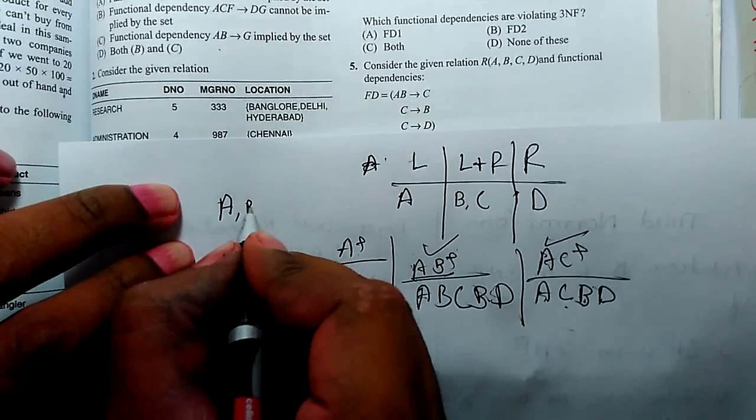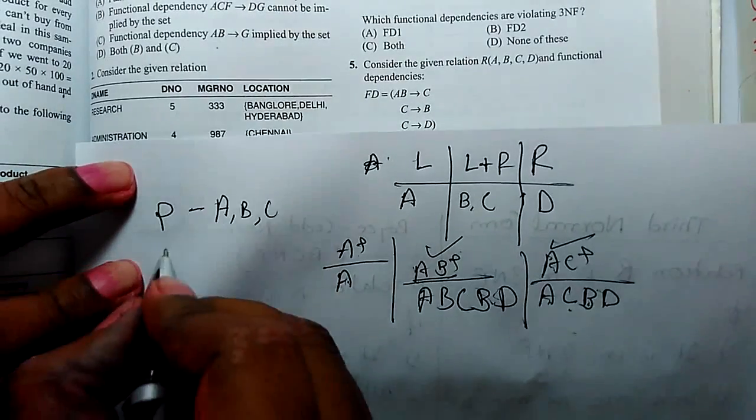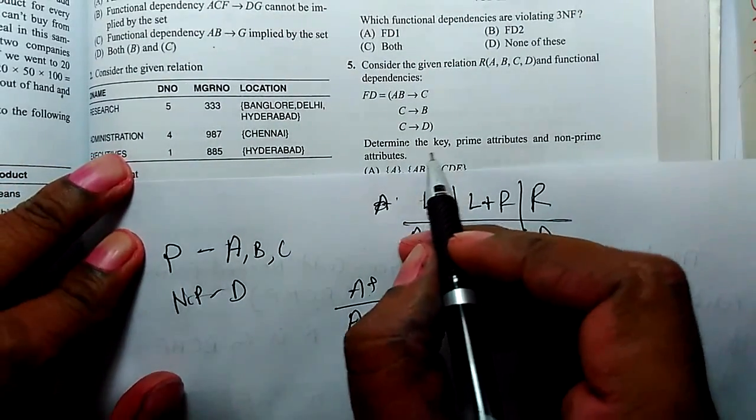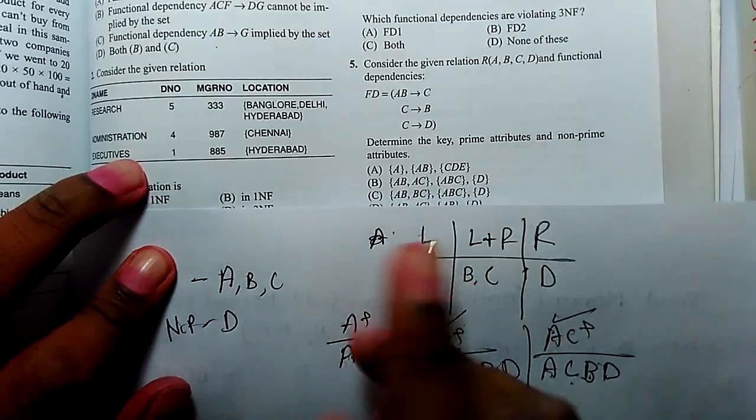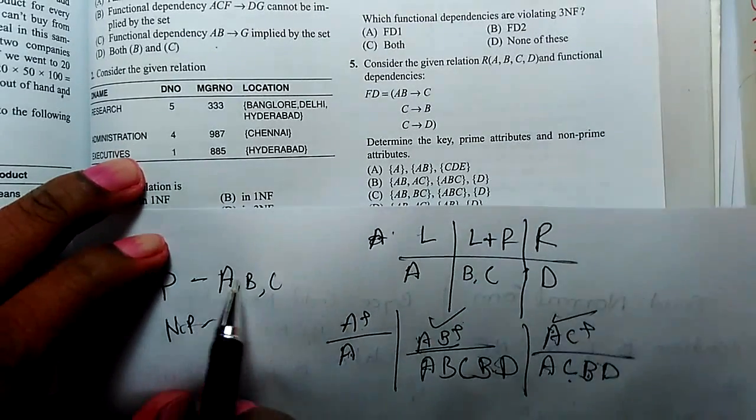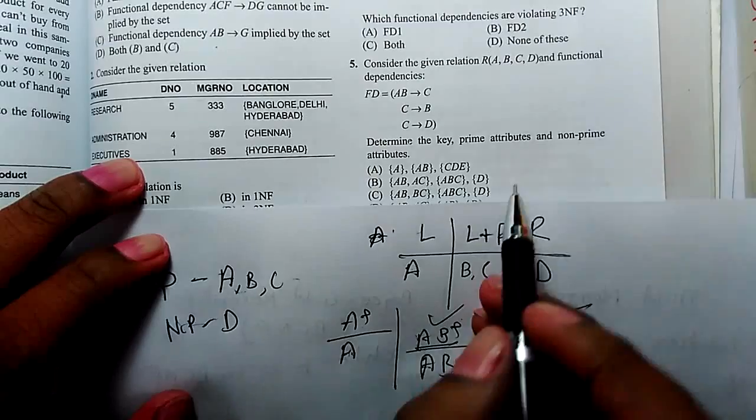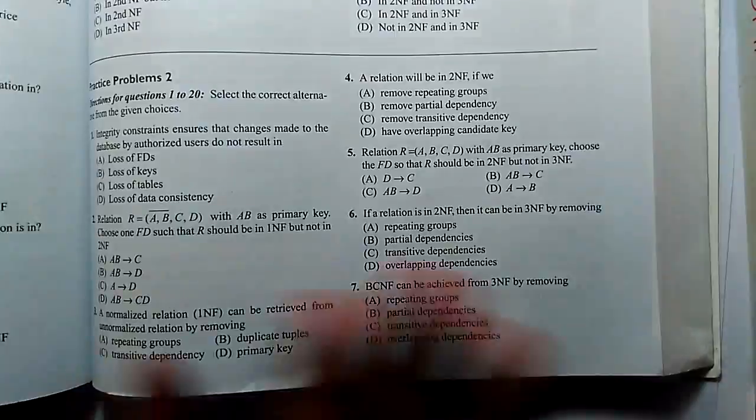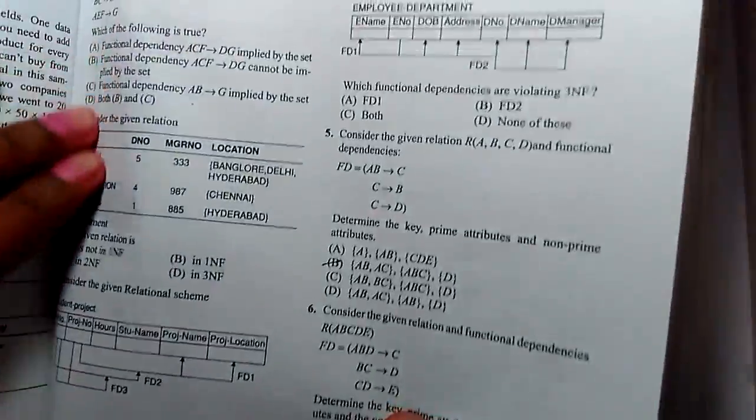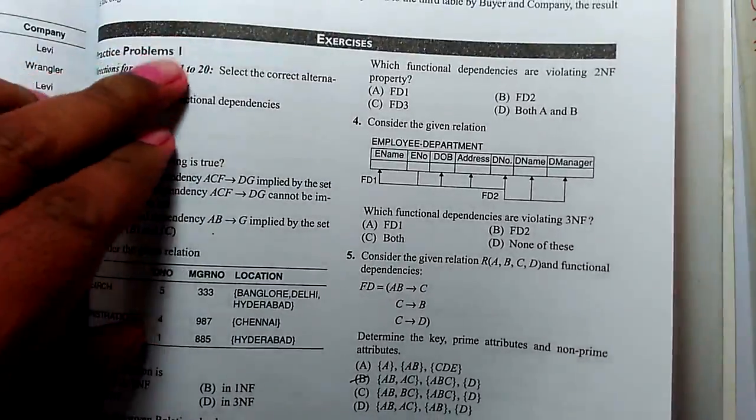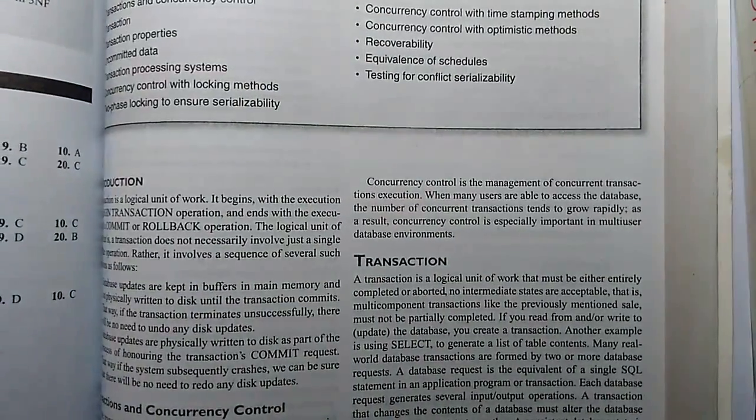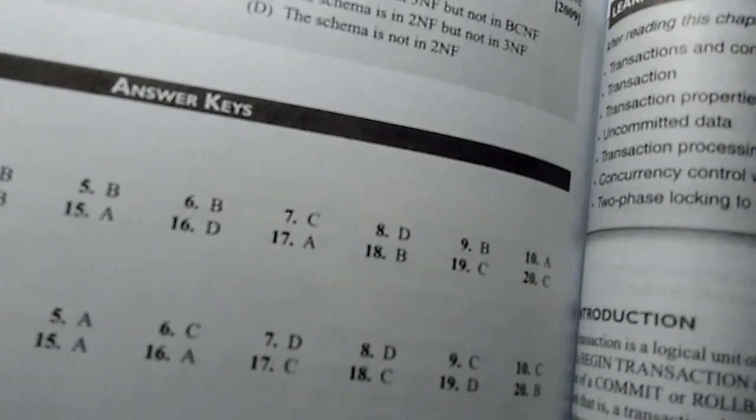And if AB and AC are keys, so A, B, and C will be prime attributes and non-prime would be D. So what is the question? Determine the key. So AB and AC would be keys. Prime attribute A, B, C, it is part of key. Non-prime is D. Answer is B part. Let's check answer. This is the exercise, problem 1, question number 5. Let me check the answer. It is B.